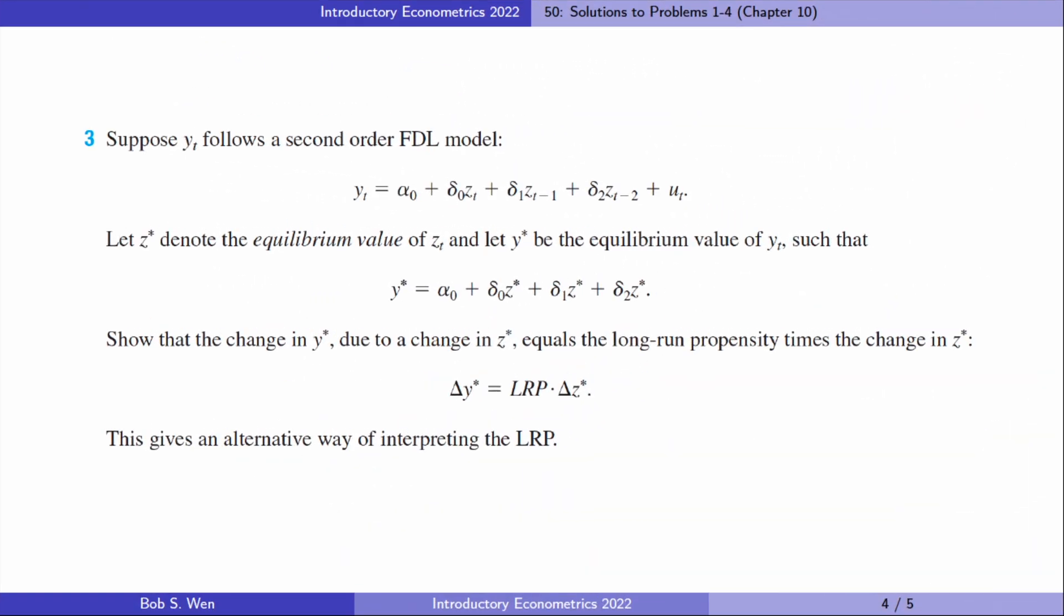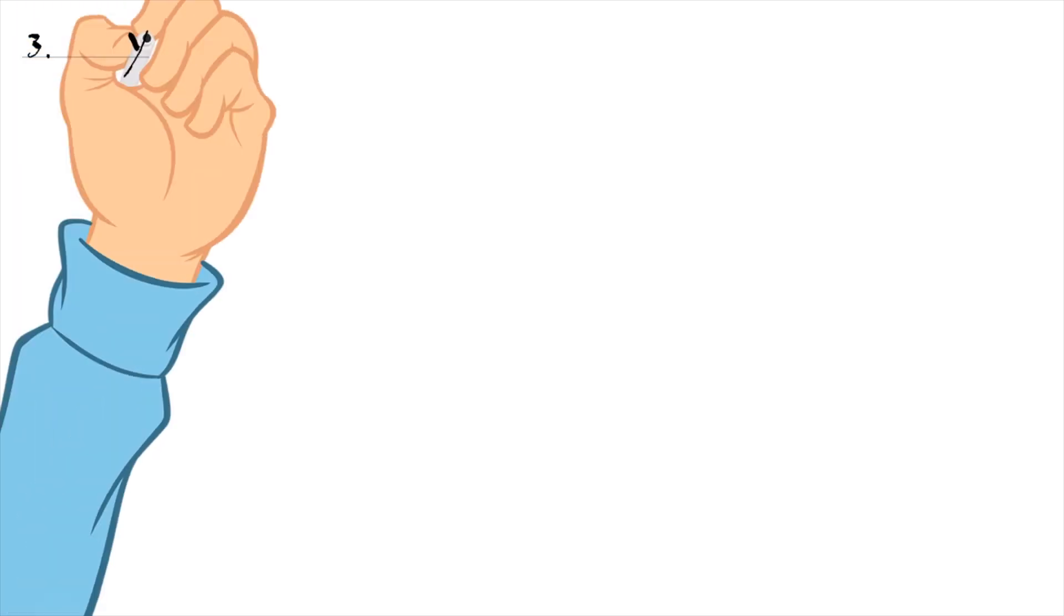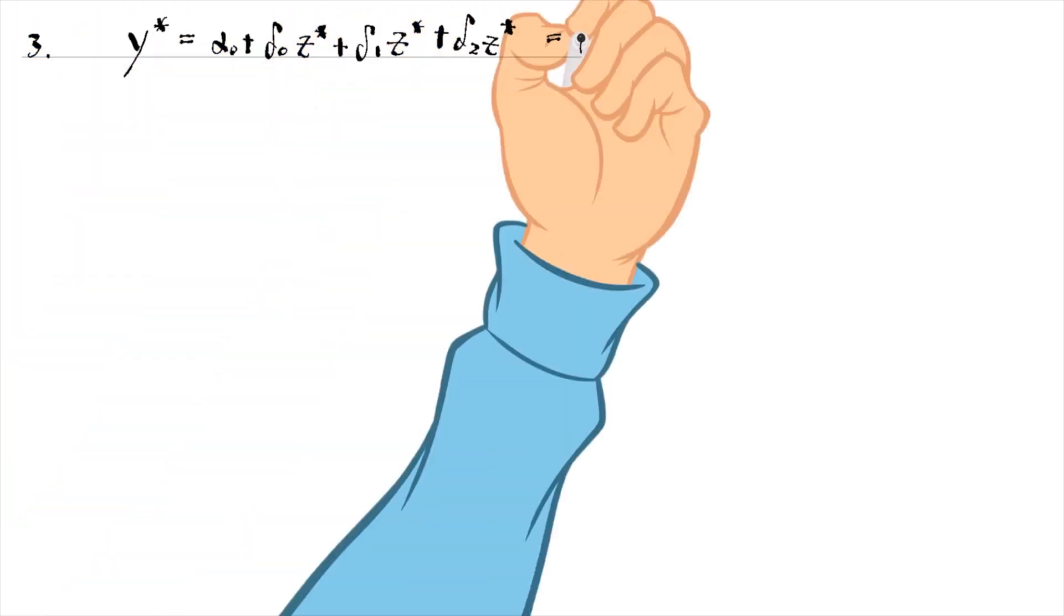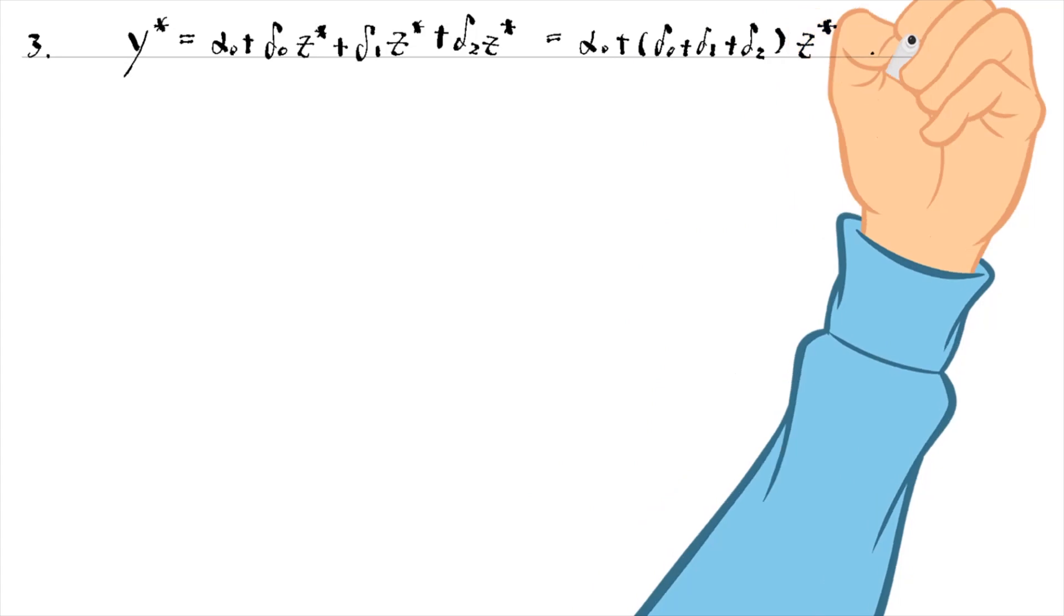Let's solve problem 3. We can write y star equals alpha 0 plus the sum of delta 0, delta 1, and delta 2 times the change in z star.